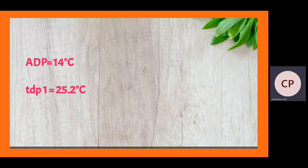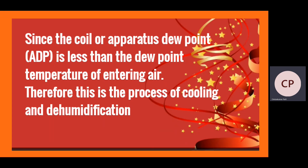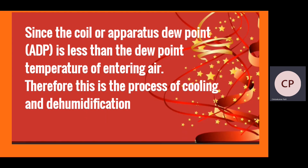Comparing the apparatus dew point (14°C) with the dew point temperature of the entering air (25.2°C), we see that ADP is less than the dew point temperature. Therefore, since the coil apparatus dew point is less than the dew point temperature of the entering air, the process 1 to 2 is a cooling and dehumidification process.